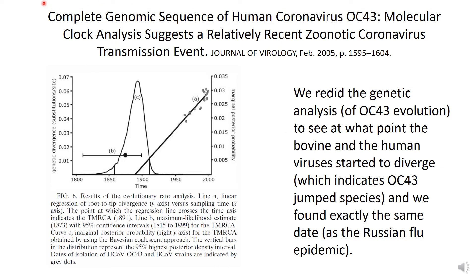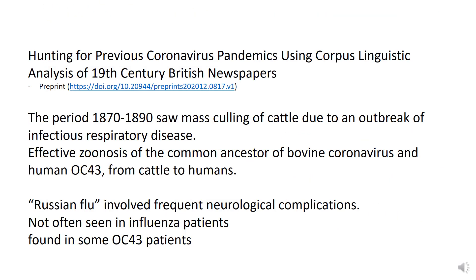Is there any other evidence? Here's a preprint where they looked for evidence of previous coronavirus pandemics using analysis of British newspapers. In the late 1800s, between 1870 and 1890, there was a mass culling of cattle due to an outbreak of infectious respiratory disease. The thought was that this disease was caused by mycoplasma, but apparently bovine coronaviruses also cause very similar respiratory disease. So the thinking is that this culling of cattle due to bovine coronavirus exposed a number of animal handlers, giving an opportunity for the bovine coronavirus and human OC43 to jump from cattle to humans.